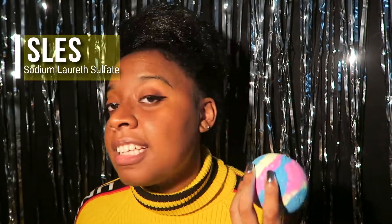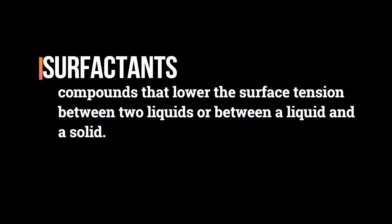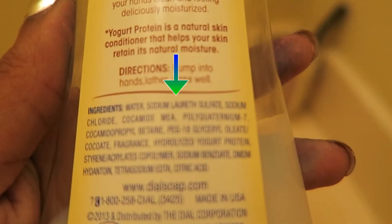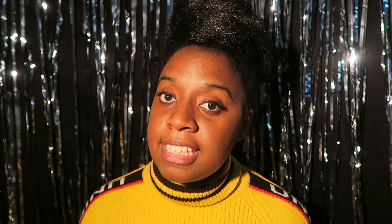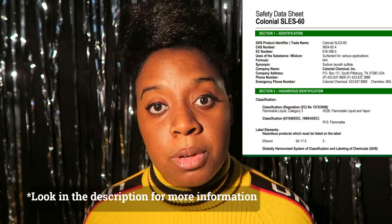For example, this bath bomb has SLES in it. It is a surfactant — some bath bombs have oils in them, and surfactants are used to help water and oil mix. It is also used as a foaming agent in many hand soaps and similar products. It is also an irritant, and I learned that from reading the MSDS worksheet.